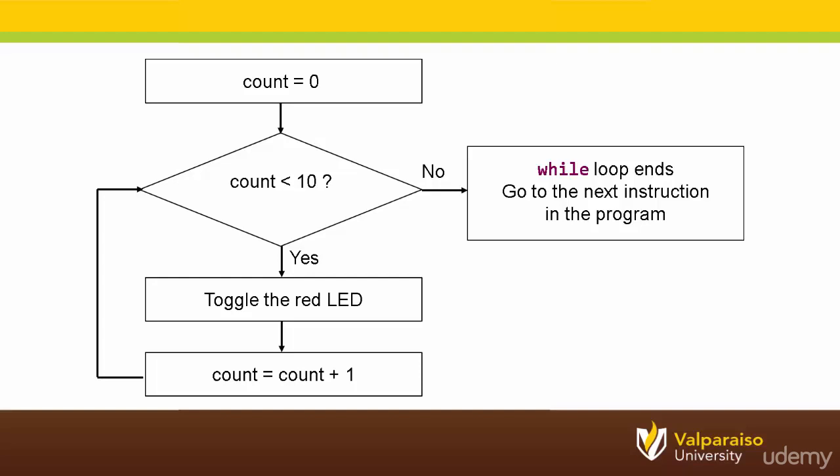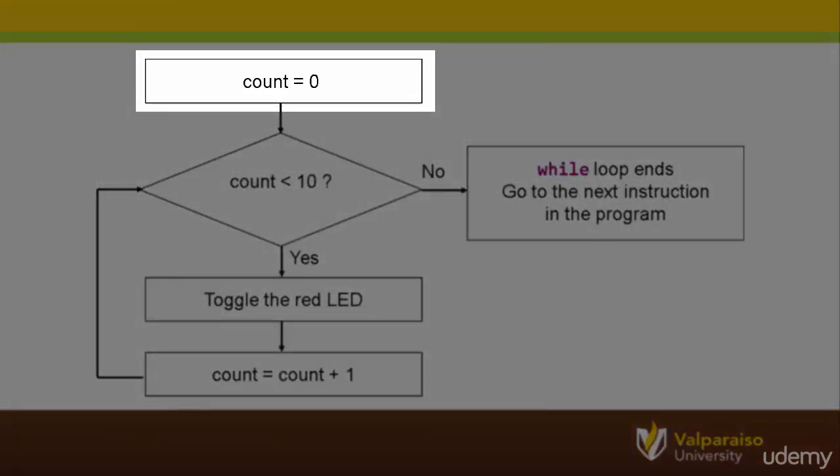The while loop begins by initializing a control variable. In this example, the control variable is called COUNT, and it is initialized to have a starting value of zero. This means that the program is reserving space in the microcontroller's memory that it is calling COUNT, and it will initially have a value of zero.